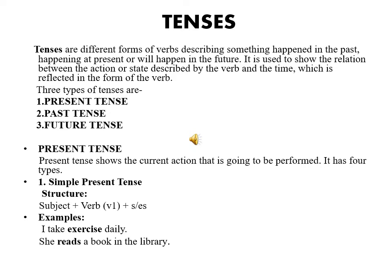Let us see what do you mean by present tense. Present tense shows the current action that is going to be performed. It has four types. First type is simple present tense. The structure of simple present tense is subject plus verb first form plus ES or S. For example, I take exercise daily. She reads a book in library.